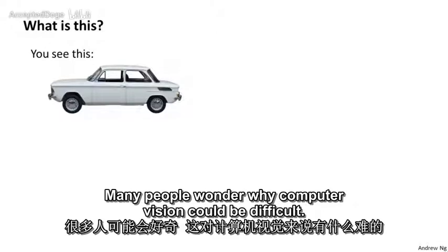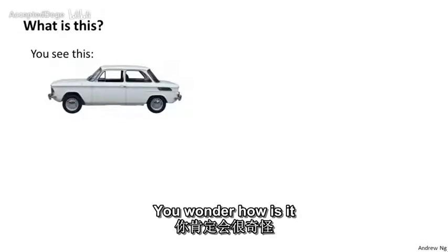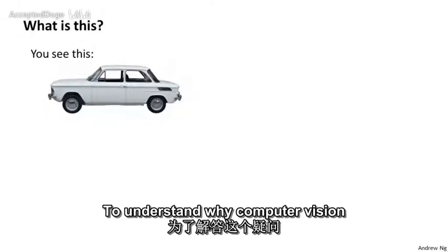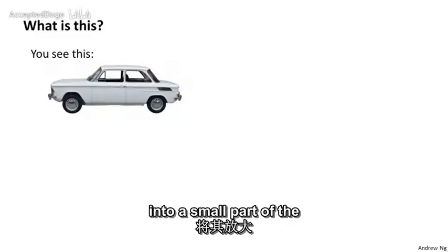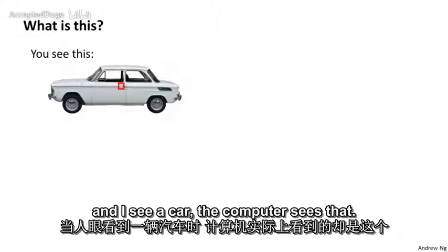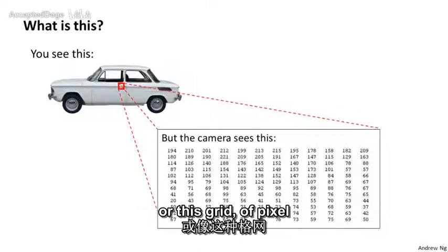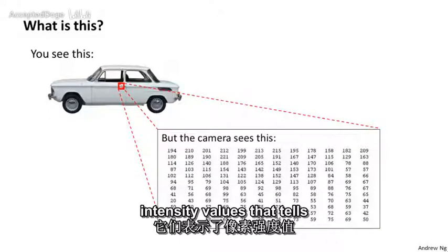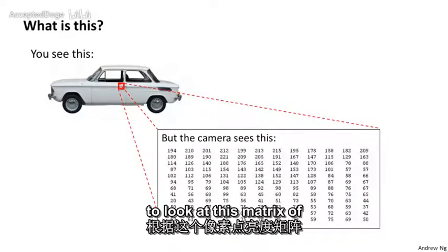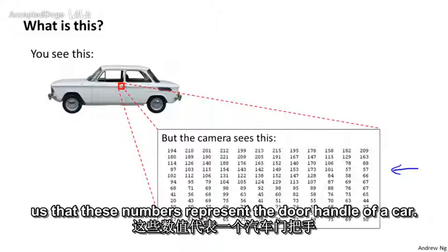Many people wonder why computer vision could be difficult. I mean, when you and I look at this picture, it's so obvious what this is. You wonder how is it that a learning algorithm could possibly fail to know what this picture is. To understand why computer vision is hard, let's zoom into a small part of the image like that area where the little red rectangle is. It turns out that where you and I see a car, the computer sees that. What it sees is this matrix or grid of pixel intensity values that tells us the brightness of each pixel in the image. So the computer vision problem is to look at this matrix of pixel intensity values and tell us that these numbers represent the door handle of a car.